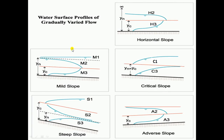Looking at the various water surface profiles of gradually varied flow, in the case of mild slope channels there are three types of surface profiles. M1: if the depth of flow is above the normal depth and critical depth, we get an M1 type curve. If the depth of flow is below the normal depth but above the critical depth, we get M2. If the depth of flow is below both the normal depth and critical depth, we get M3 curves. Likewise for other slopes.